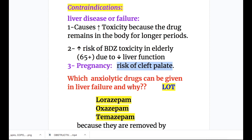Which anxiolytic drugs can be given in liver failure? The mnemonic is LOT: L for lorazepam, O for oxazepam, and T for temazepam. These three drugs may be given in liver failure because they are removed by conjugation.